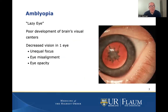The next topic is amblyopia, generally termed lazy eye. It's due to the poor development of the brain's visual centers at a young age, and it's typically decreased vision in one eye — either from unequal focus of the two eyes, an eye misalignment, or an opacity or cloudiness in the lens of the eye. This child shown has a cataract in the pupil; that cloudiness is due to an injury.